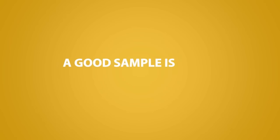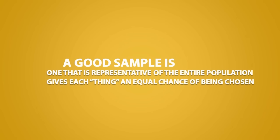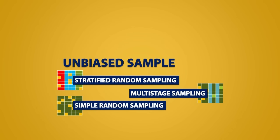Remember that a good sample is one that is representative of the entire population, and it gives each thing an equal chance of being chosen. When you have these conditions, you have what is known as an unbiased sample. We will be looking at three different types: stratified random sampling, multi-stage sampling, and simple random sampling.